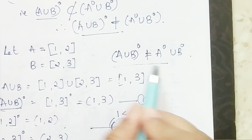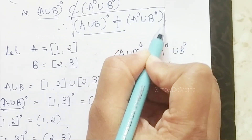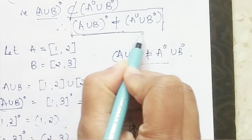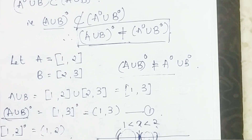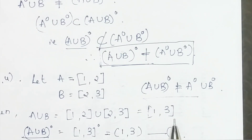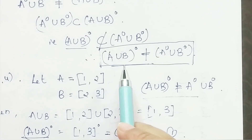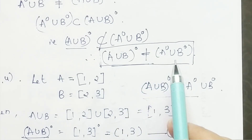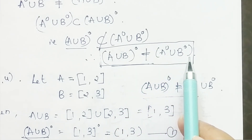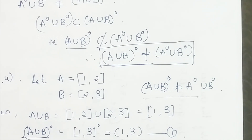From equation 1 and equation 2, we can see that Int(A ∪ B) is not equal to Int(A) ∪ Int(B). This proves the result. Generally, we can say that the interior of A ∪ B is not equal to the interior of A union the interior of B. Let's learn some more concepts in our next video. Thank you.